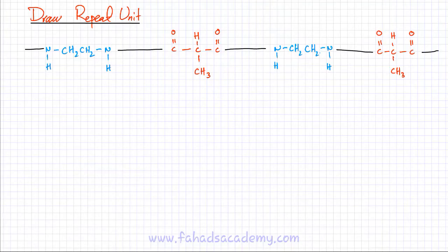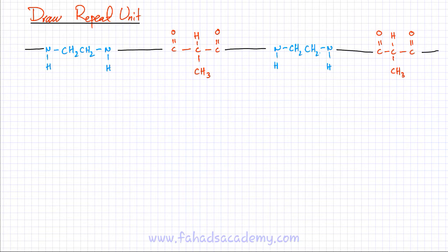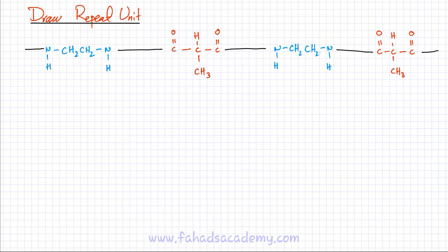Let's do another example for drawing a repeat unit. I've drawn another of the polyamides from earlier. This is a polyamide with the amide link — C double bond O and N-H. You have these links, and all these monomer residues have been linked together by these amide links.